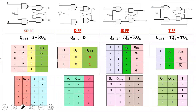The first column is SR flip-flop, second column is D flip-flop, third column is JK flip-flop, and fourth column is T flip-flop. In the second row, flip-flop represents the characteristic equation. Third row is truth table, and fourth row is excitation table.